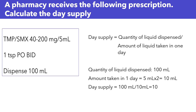Let's look at this prescription together. Calculate the day supply. We have the following prescription: trimethoprim sulfamethoxazole 40-200 mg per 5 ml, one teaspoon by mouth twice daily, and dispense 100 ml.